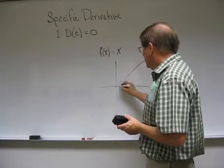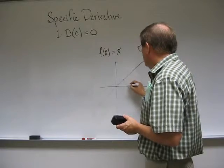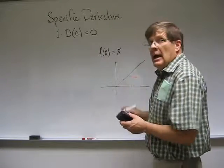The graph of f of x is equal to x looks like this line. If x is 0, y is 0. If x is 1, y is 1. If x is 2, y is 2. If x is 3, y is 3, and so on.